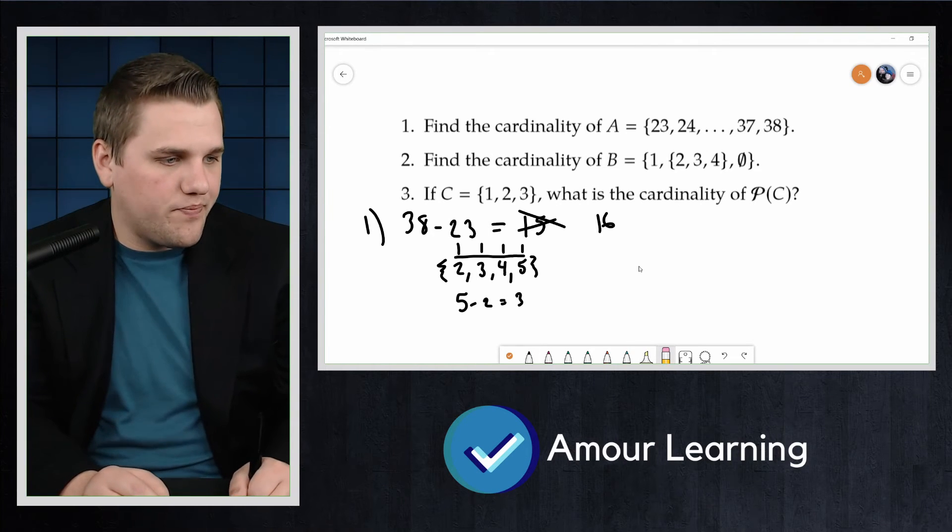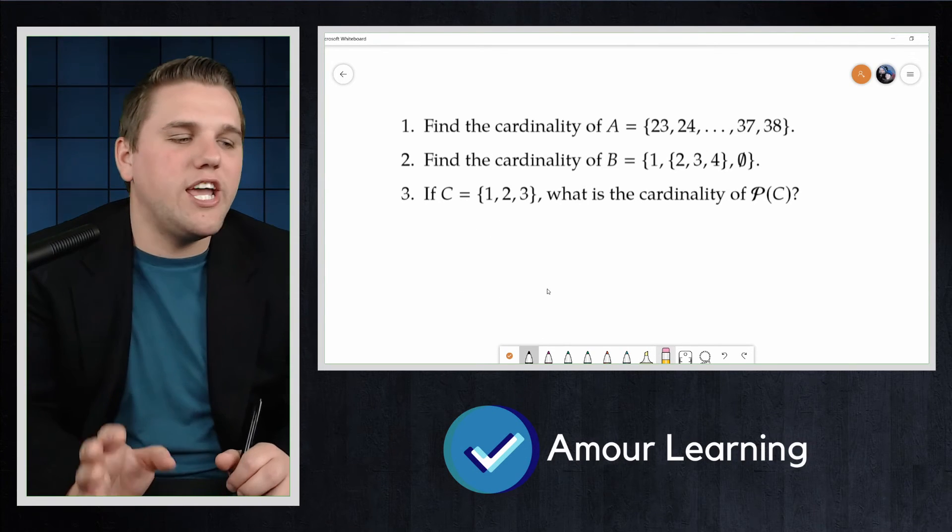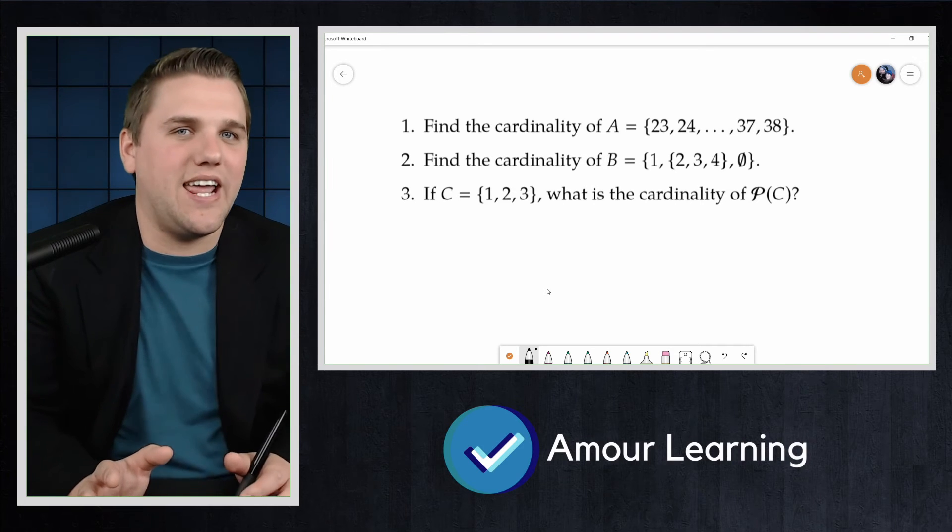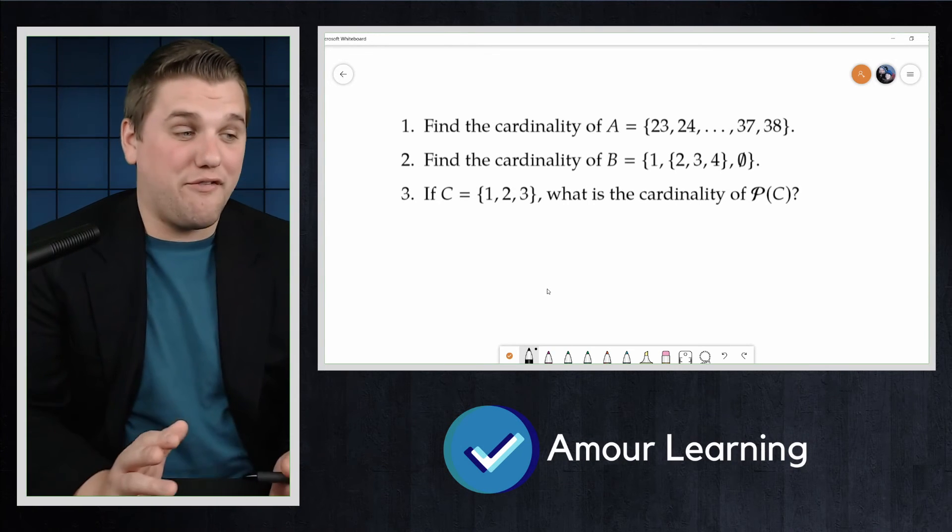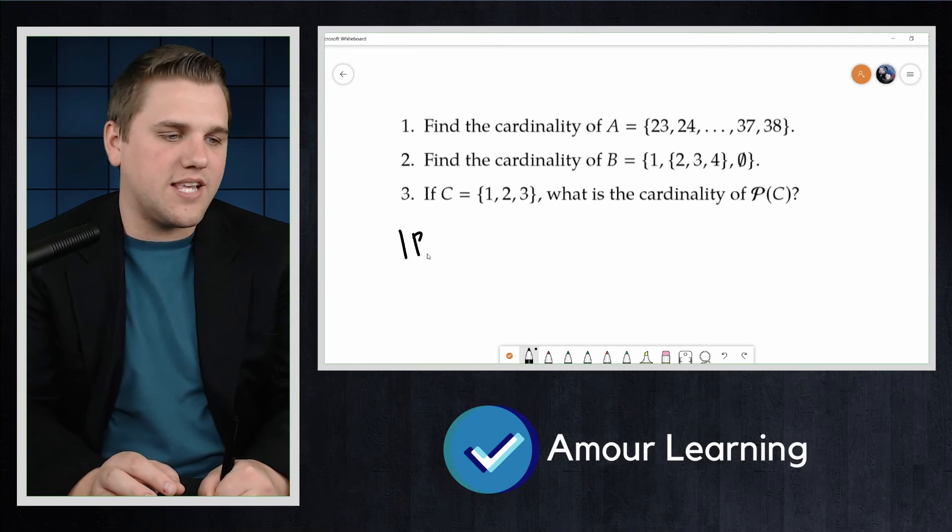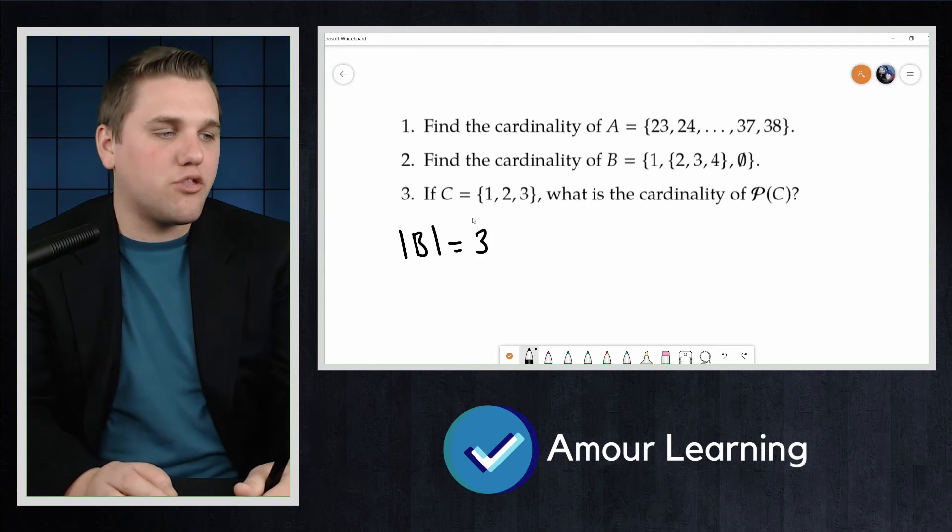For number two, in this instance, it's really tempting to say that the set has a cardinality of either 4 or 5. But the answer is that the size of B is 3.